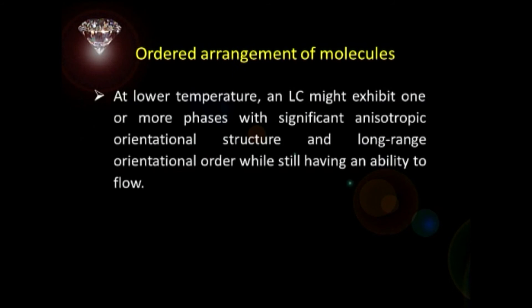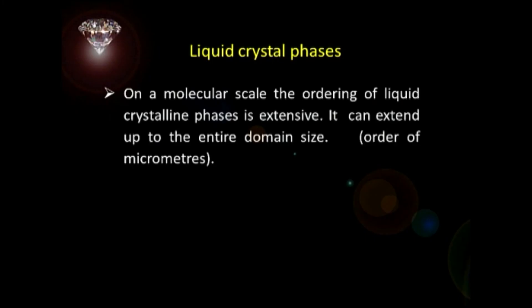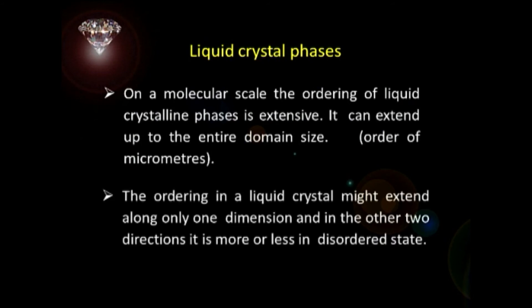At lower temperature, a liquid crystal might exhibit one or more phases with significant anisotropic orientational structure and long range orientational order, while still having the ability to flow. At still lower temperature, they will behave like any other solid. On a molecular scale, the ordering of liquid crystalline phases is extensive — it can extend up to the entire domain size, which is of the order of micrometers. The ordering in a liquid crystal might extend along only one dimension, and in the other two dimensions it is more or less in a disordered state.